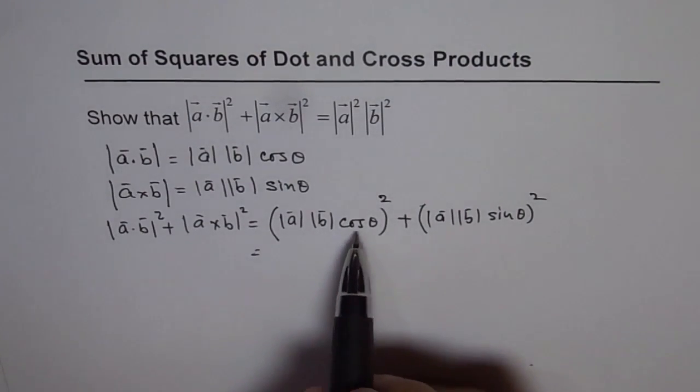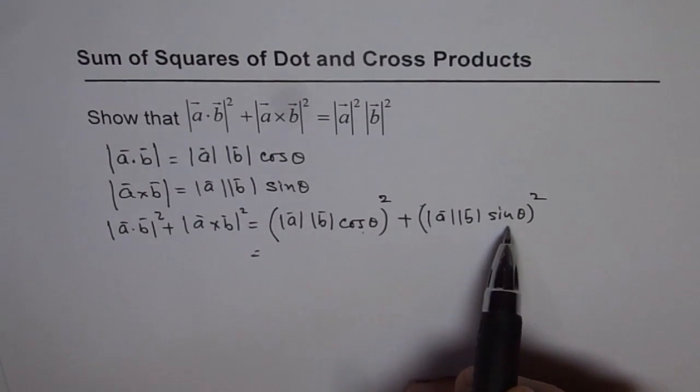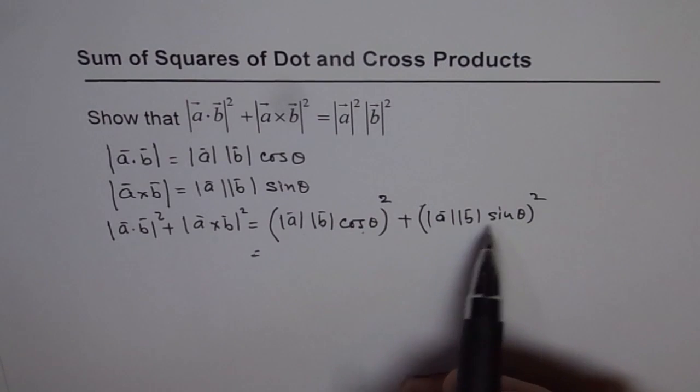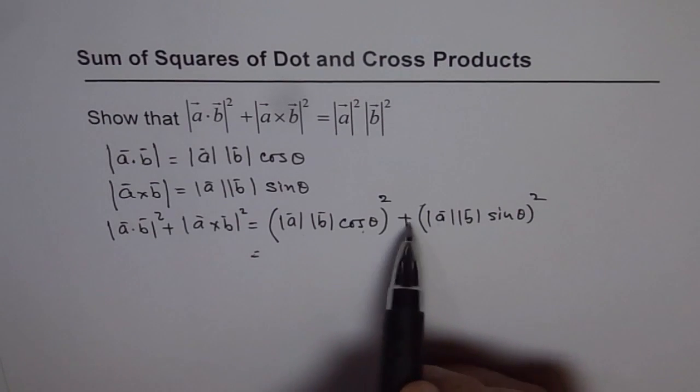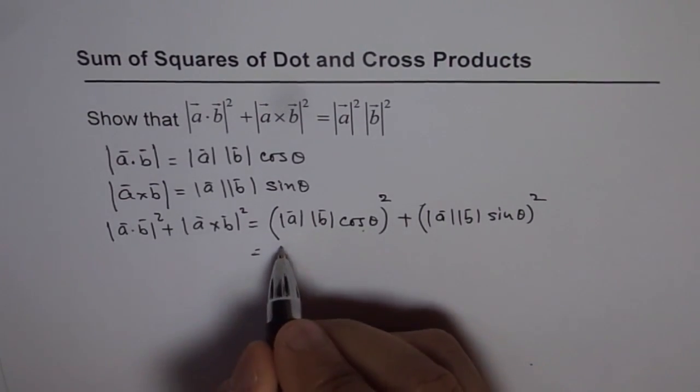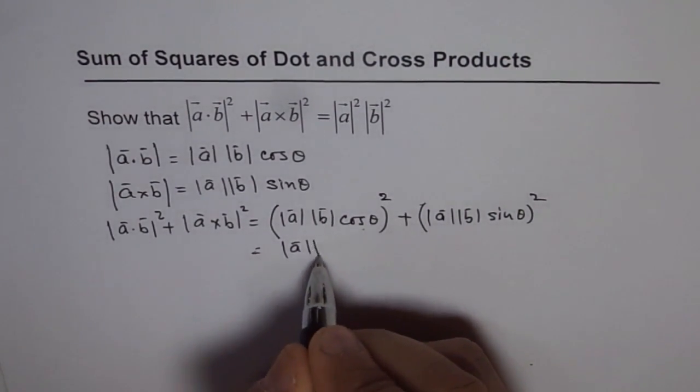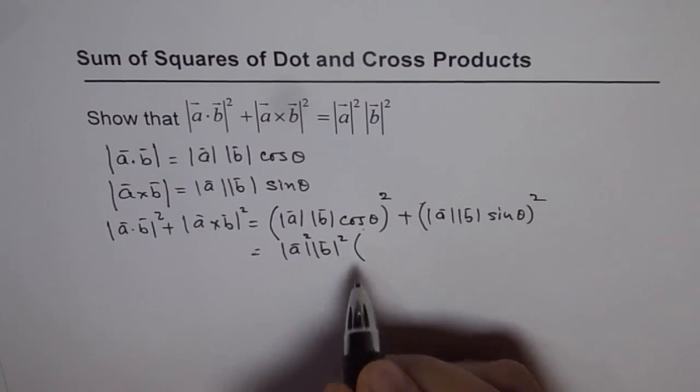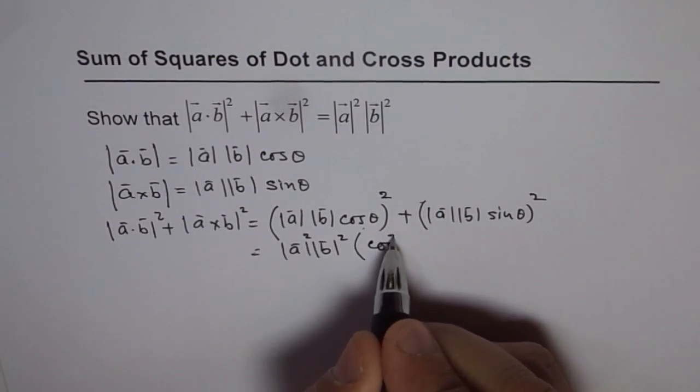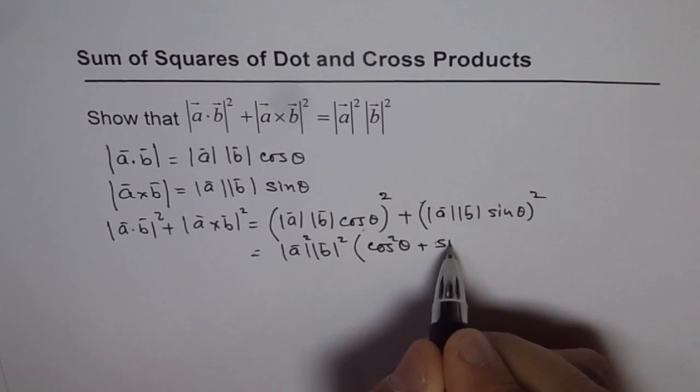And now you know, you remember cosine square theta plus sine square theta is how much? One. And here we have magnitudes of A and B as common. So we can factor them out. So we get magnitude of A magnitude of B, this is all square. And in the brackets we get cosine square theta plus sine square theta.